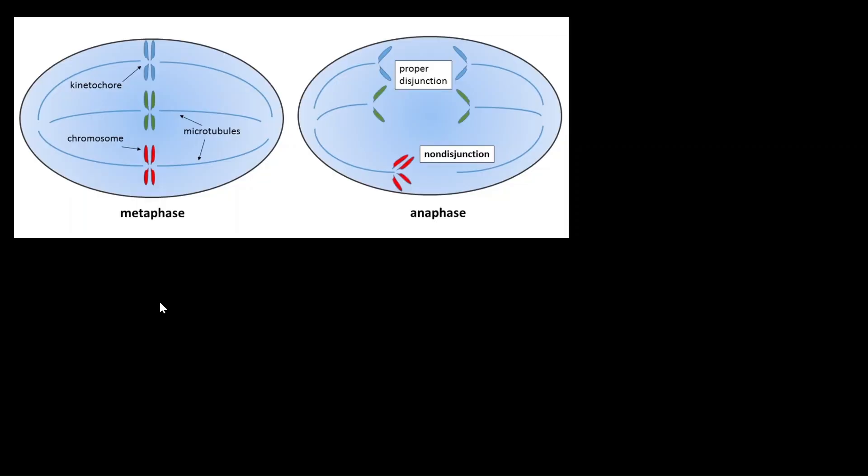The chromosomes align along the center of the cell during metaphase, and then they are pulled to the opposite ends by spindle fibers during anaphase. The separation process is also termed disjunction.